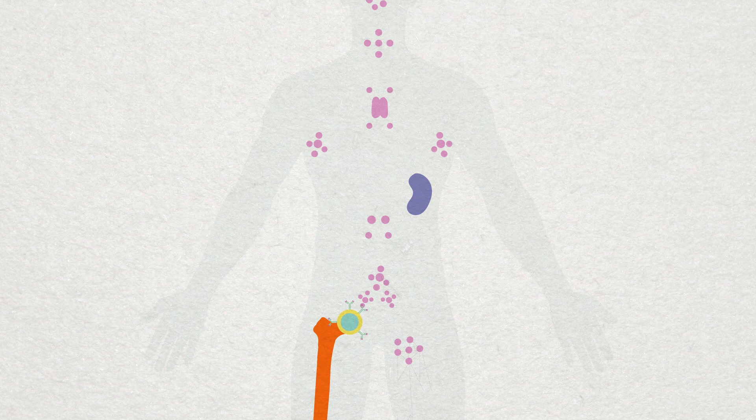When the B-cells are armed with these receptors, they migrate to the lymph nodes or the spleen. This is now their new home where they stay put.